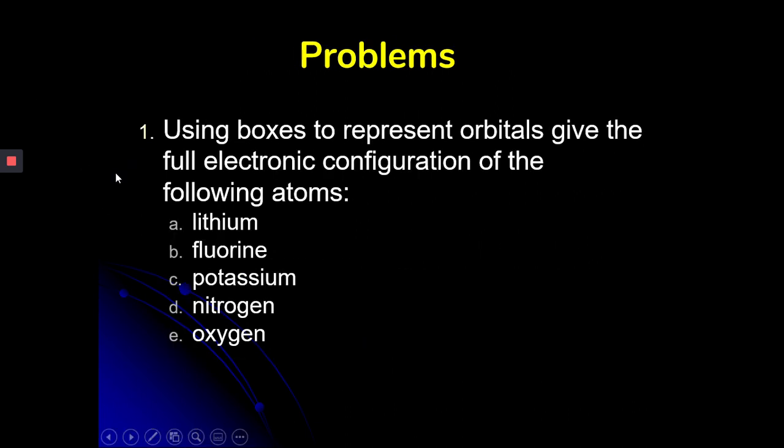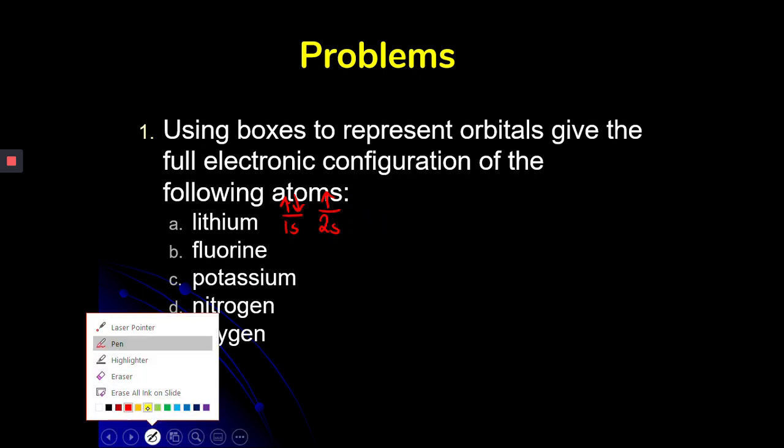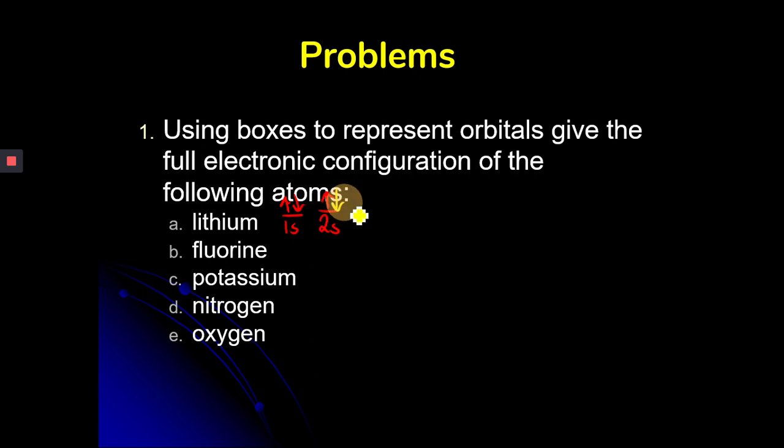All right. So use boxes to represent orbitals and give the full electron configuration for the following. Lithium 1S. And then you would draw your two electrons. 2S1. For fluorine, we could continue this. And for fluorine, we can add on 2P. 1, 2, 3, 1 in each before you go back and pair up. And there's fluorine.